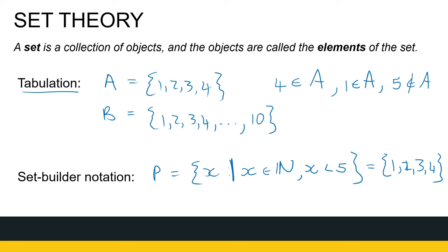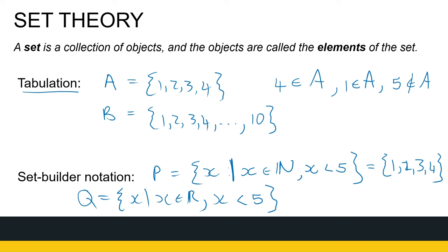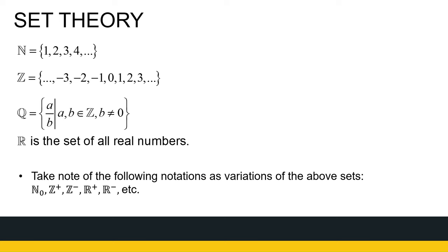It looks very much like set A, but we can write it in different ways. There are also cases where we don't want to tabulate, or we can't tabulate a set. If I say the set Q is all the real numbers X given X is less than 5 — all the real numbers smaller than 5 — can you list them? No! There's no way to list all of them because there's an infinite number of them. There's also no pattern to it. So we need set builder notation, especially if we are not able to tabulate a set.